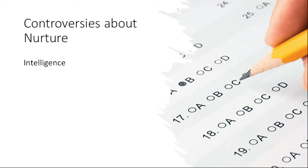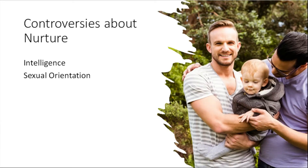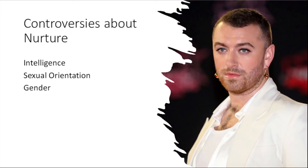We can revisit these controversies from the nurture side too. Can you raise a child to be intelligent? From this we get the idea of hothousing children with private tutors and intensive schools to make them as intelligent as possible. Then there's sexual orientation — can you raise a child to be straight or gay, or does orientation have to be there from the beginning? Recently we've had controversies about gender. The entertainer Sam Smith, who identifies as non-binary — is this the way Sam Smith was born, or has Sam Smith developed this identity through social experience? Gender is probably the most contentious area in the nature-nurture debate.